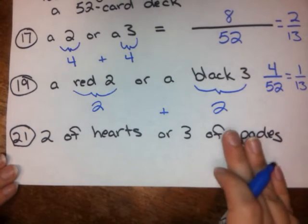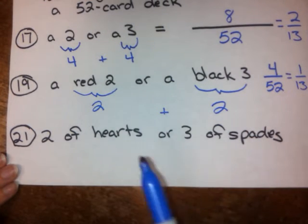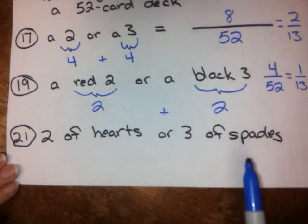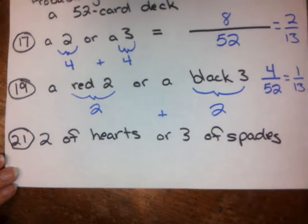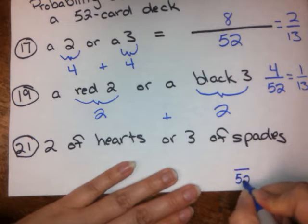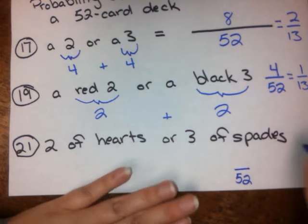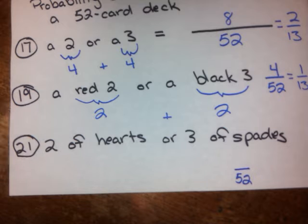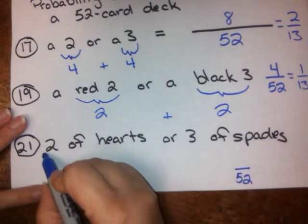So finally, what is the probability of selecting the 2 of hearts or the 3 of spades from a 52-card deck? Well, again, we know because we're working with the whole deck that we're going to be over 52, right? So we just need to figure out what our successes are. How many successes?